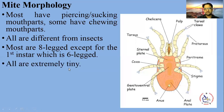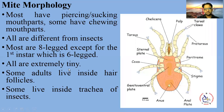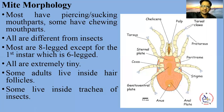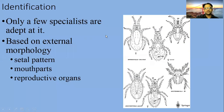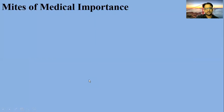Mites are all extremely tiny and smaller in size. Some adults live inside hair follicles and some live inside the trachea of insects — the respiratory system of insects. Classification and identification of mites is based on external morphology, setal pattern, mouthparts, and reproductive organs.